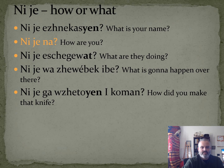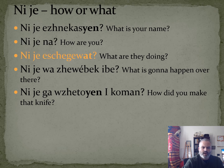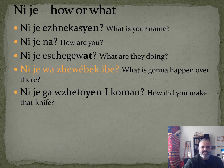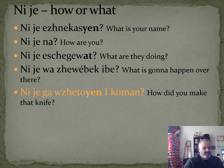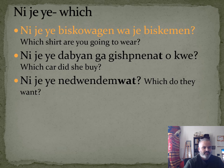Ninja now means 'how are you?' Ninja eshtage means 'what are they doing?' Ninja was your way a buck eva means 'what's gonna happen over there?' Ninja gaoja toyan eekoman means 'how did you make that knife?' Ninja ye wetch means 'which.'